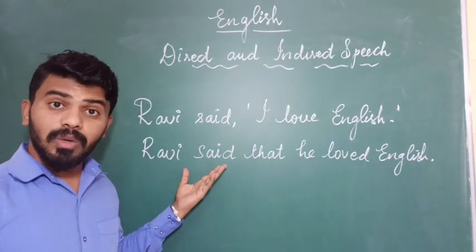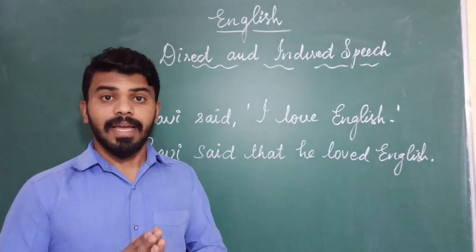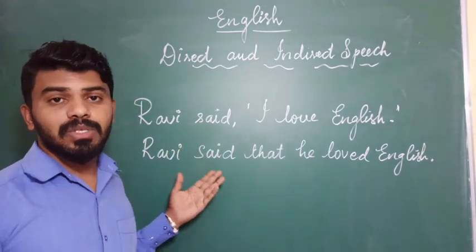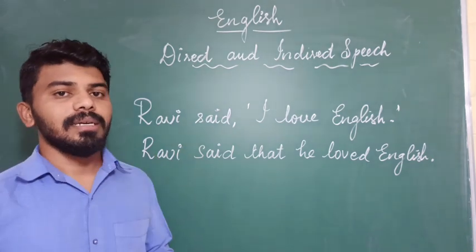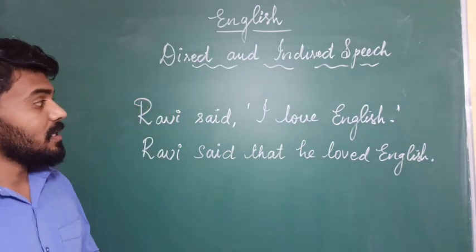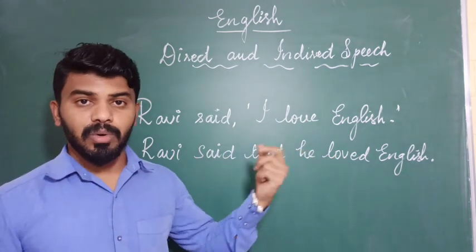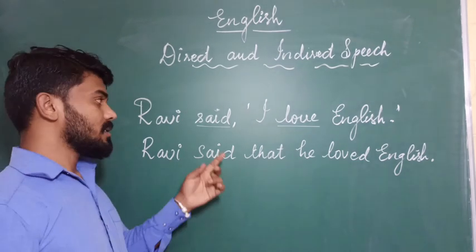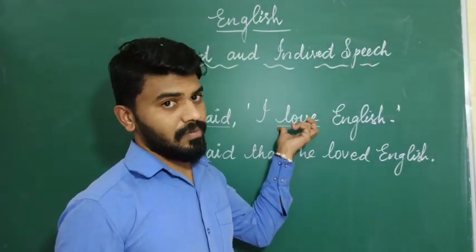There are a few alterations in the construction and the syntax of the sentence. When you convert direct into indirect, we make a lot of changes in the syntax, but the meaning always remains the same. The first rule is: you need to identify the reporting sentence and the reported sentence — more precisely, the reporting verb and the reported verb. Here, 'said' is the reporting verb and 'love' is the reported verb.